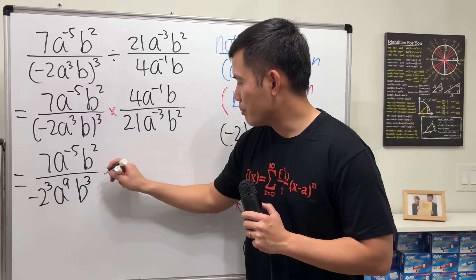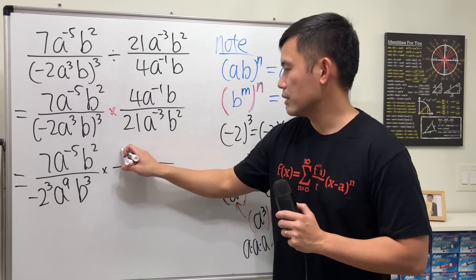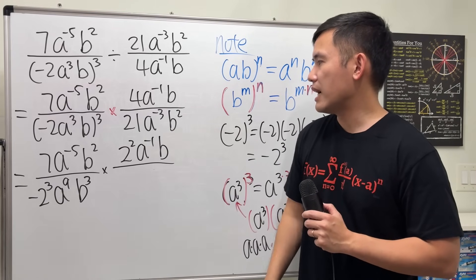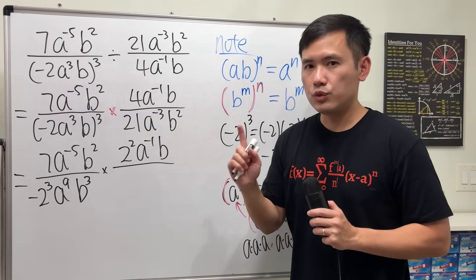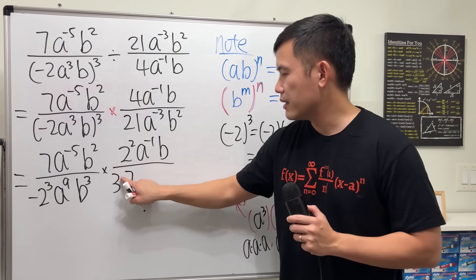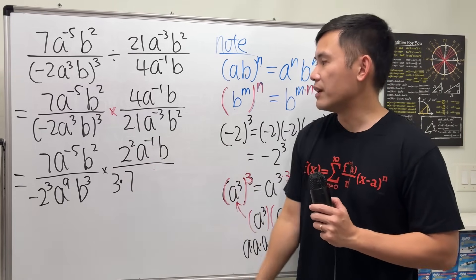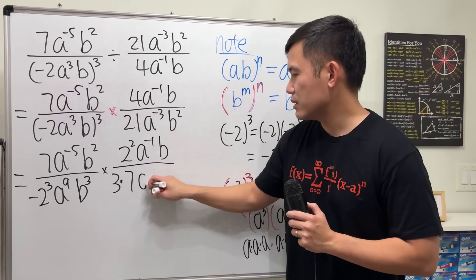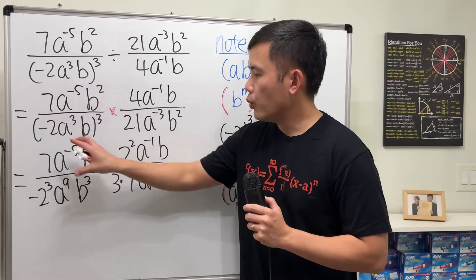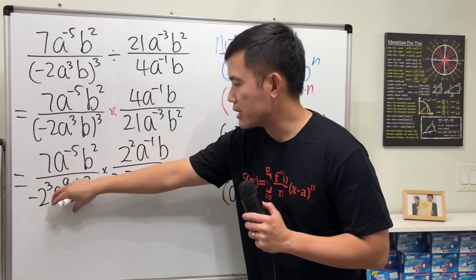Continue — we have the multiplication sign. The 4 is the same as 2 times 2, so let's write it as 2 squared. a to the negative 1, keep it. b is still b, keep that. And 21 is 3 times 7 — make sure it's not 3 to the 7th power, it's just 3 times 7. Then right here, there's nothing else we can do, just keep that.